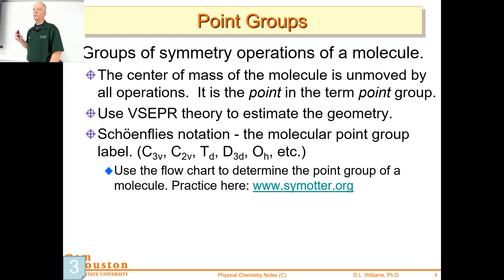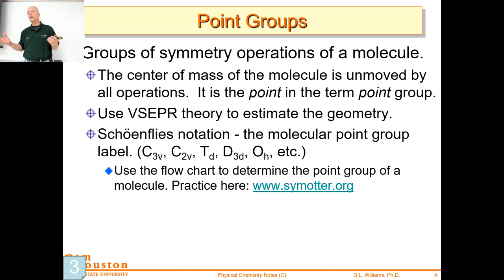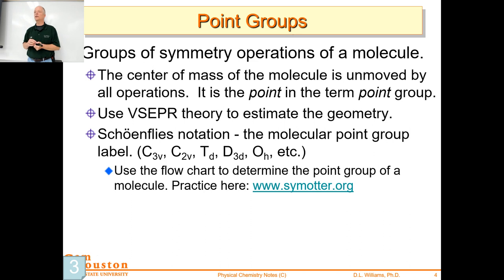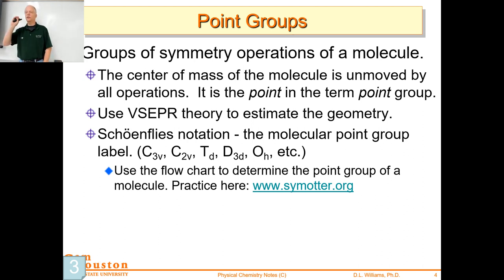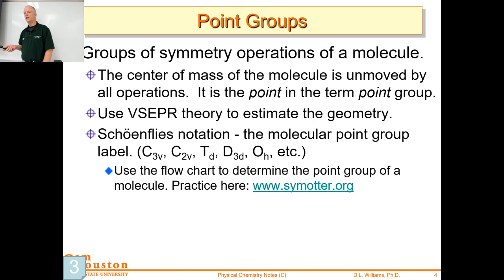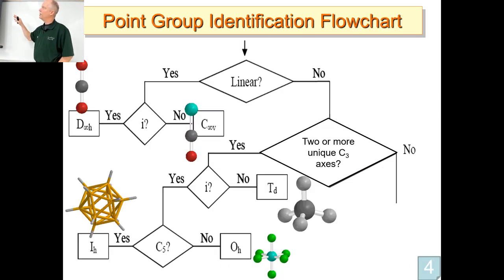Let's review the point groups quickly. I want to make sure you know this vocabulary word — the Schoenflies notation. When I talk about Schoenflies notation, that's the point group designation, like C2V or D-infinity-H. You use the flowchart in the lab to come up with the point group label, and that point group label is called the Schoenflies notation. We start with the Lewis dot structure, turn that into a VSEPR shape, then take that VSEPR shape through the flowchart and come up with the Schoenflies notation. You can practice at SimOtter, and the flowchart has an example of every point group.